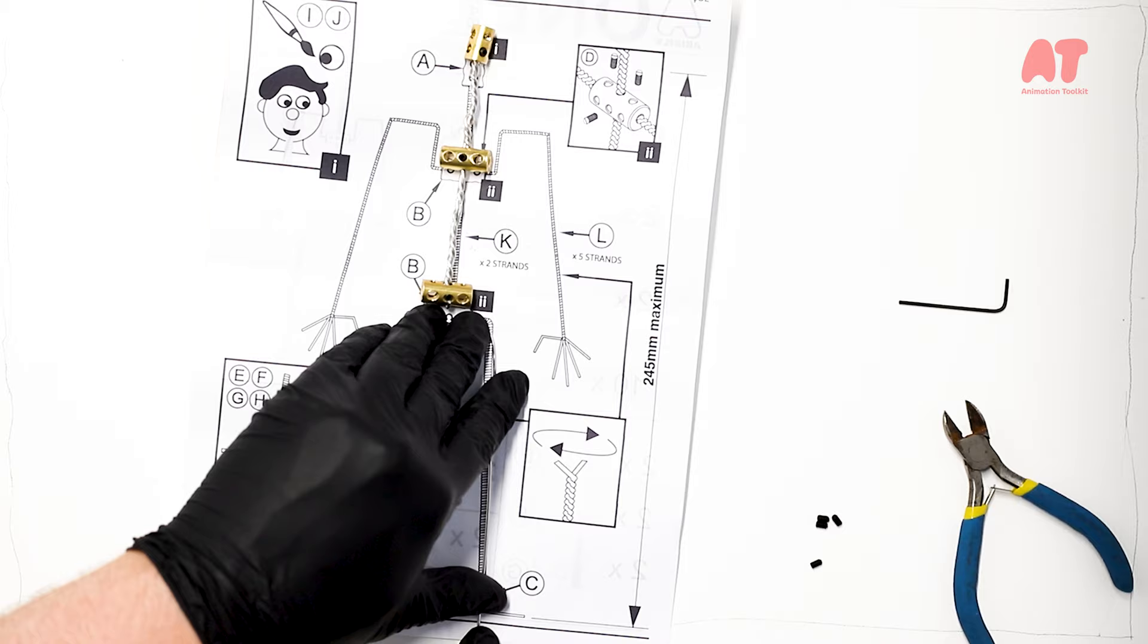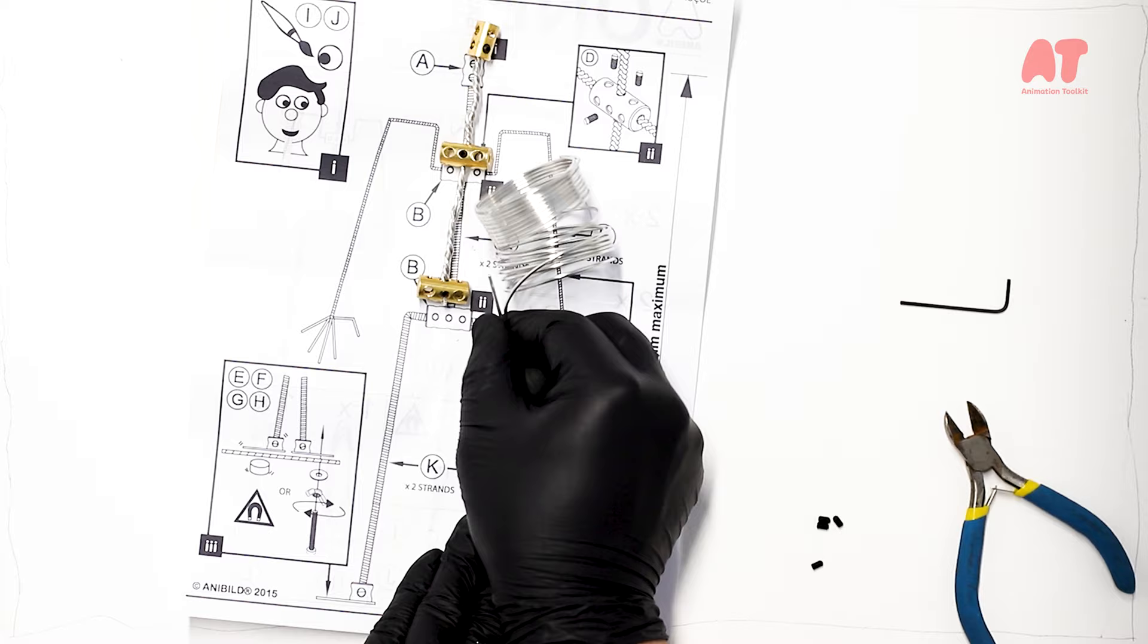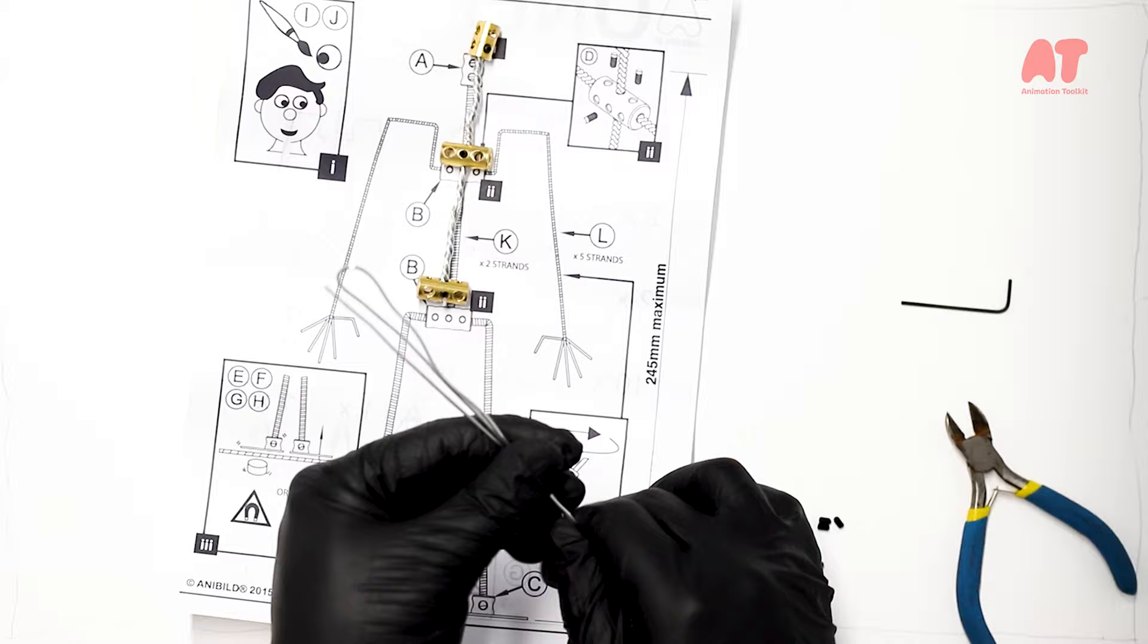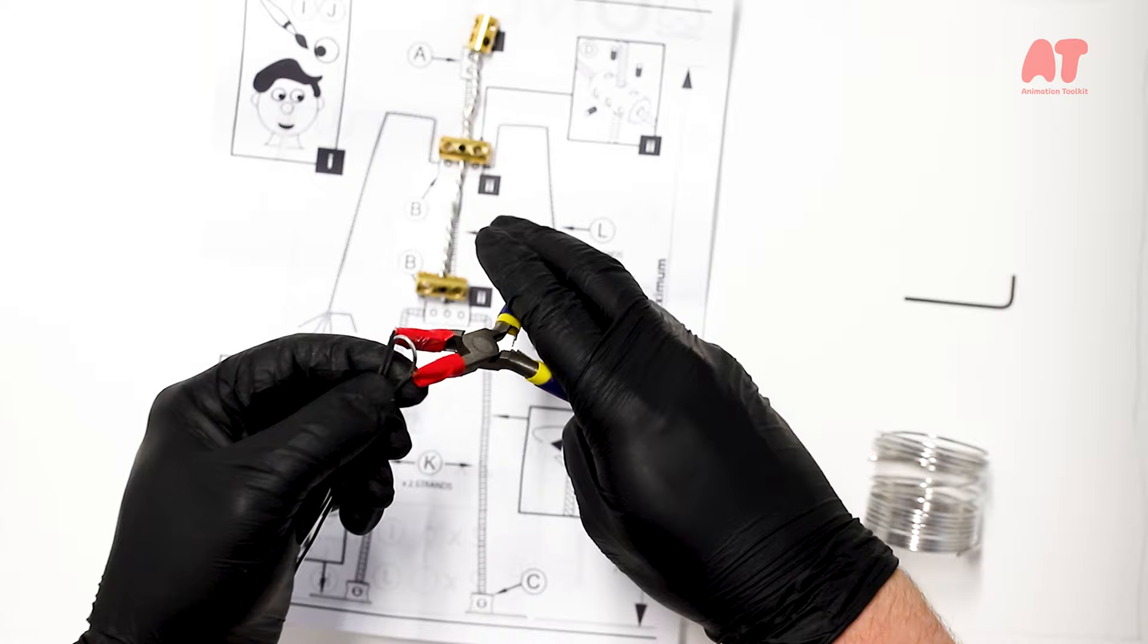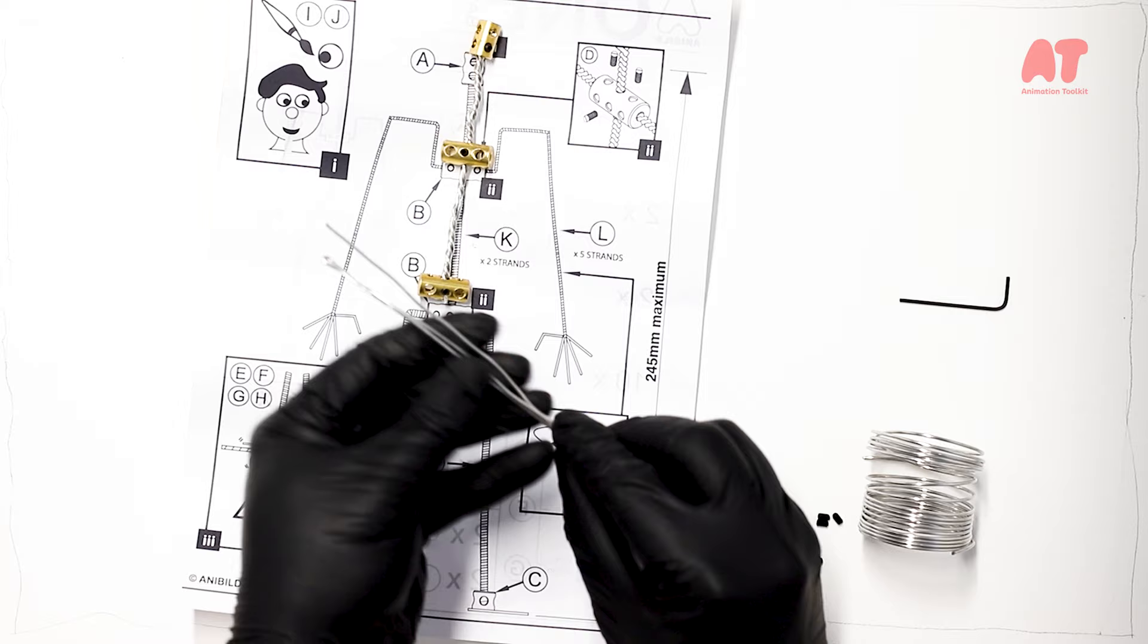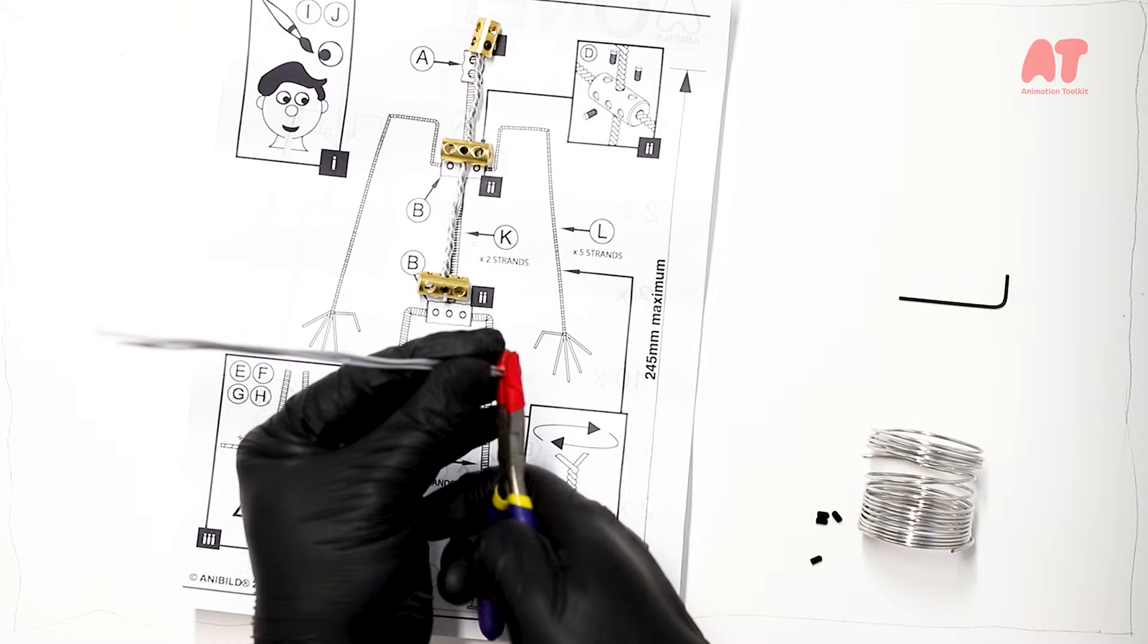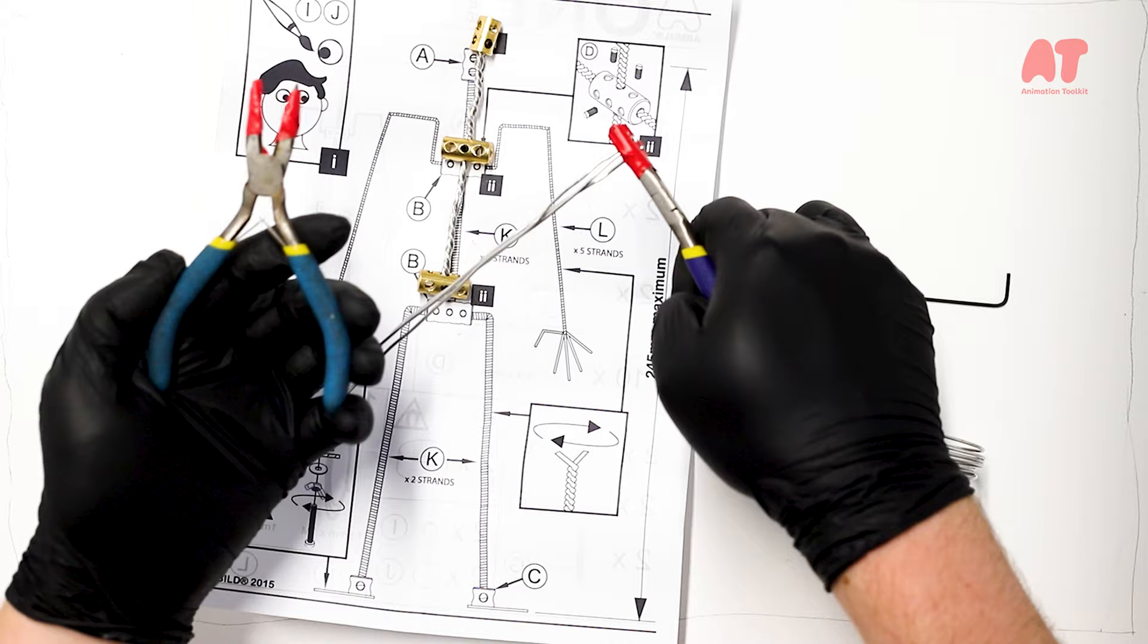Now for the legs. I'm measuring against the instructions because these are to scale. As you'll see, that's two strands, but for good measure, I've made it three strands again. Having had a bit of practice, clamp it at one end with your pliers.